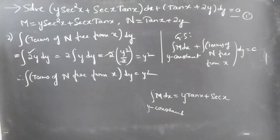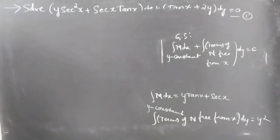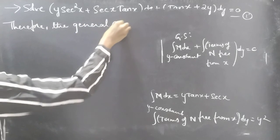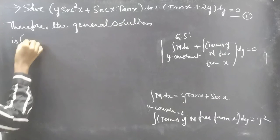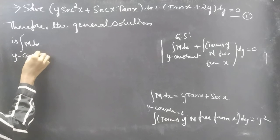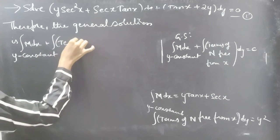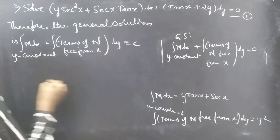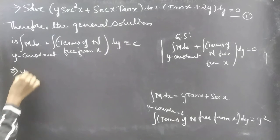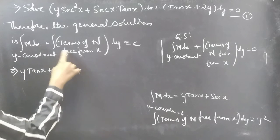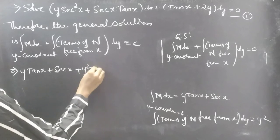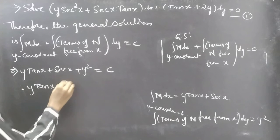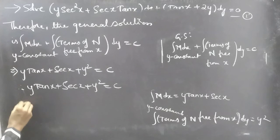Now coming to the general solution: integral of M dx treating y as constant, plus integral of terms of N free from x into dy, equal to c. The result from the first integral is y tan x plus secant x, and the result from the second integral is y squared. Therefore, y tan x plus secant x plus y squared equal to c is the required solution.